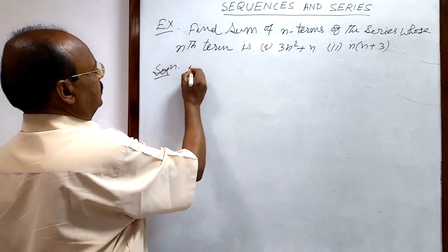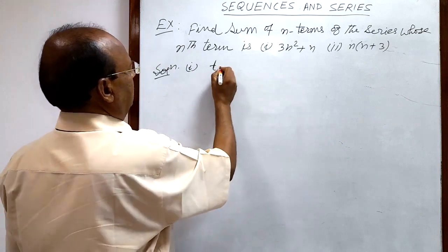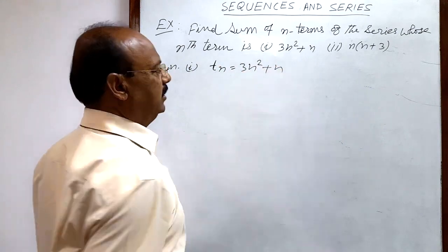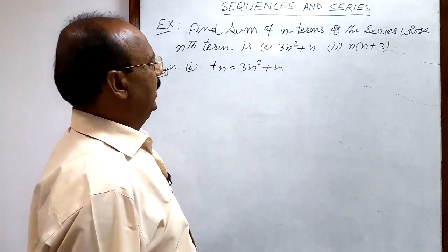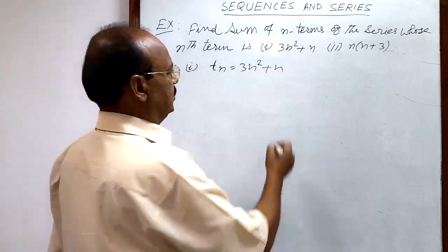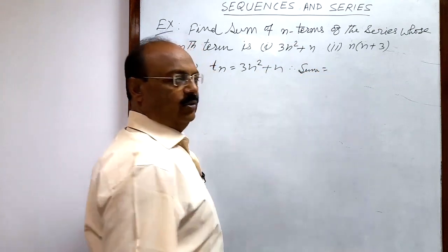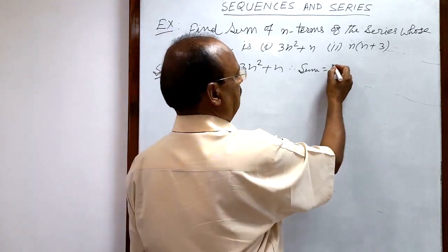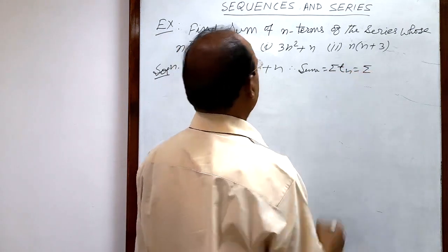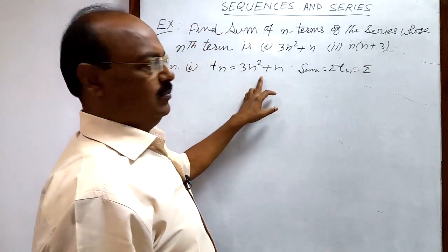First, let us see the first question. Here the nth term, t_n, is given as 3n² + n. We have to find the sum of n terms of the series. Therefore, the sum of n terms will be sigma(t_n), where t_n = 3n² + n, so sigma(3n² + n).